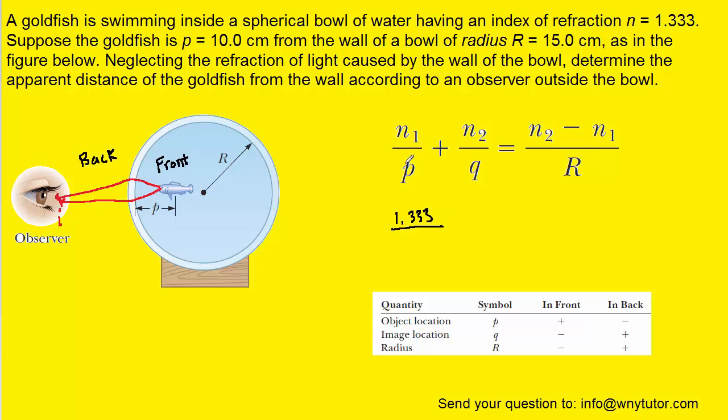Below that we have p, which is the object distance. And we can see that the object again is on the front side. That's where the fish is located. And whenever the object is located on the front, we're going to assign it a positive object distance. Now we were told that the fish is located a distance of 10 centimeters from the wall of this bowl. So we would use positive 10 centimeters in our equation.